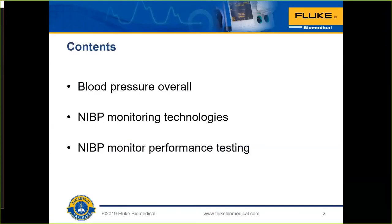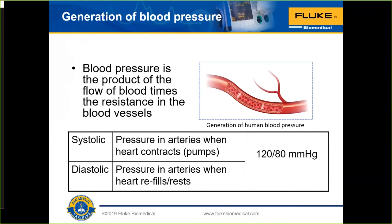Blood pressure overall, NIBP monitoring technologies, and NIBP performance testing. Blood pressure is the product of the flow of blood times the resistance in the blood vessels, and that resistance varies. Your blood vessels aren't just pipes — they flex, constrict, and expand. When we make this measurement, we're looking for two different parts: systolic, which is the pressure in the arteries when the heart contracts, and diastolic pressure, which is the pressure in the artery when the heart is relaxed.